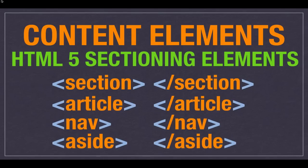With HTML5, we've got four main sectioning elements that help us create sections on the page. A section element is essentially saying that this part of the page is its own separate section that's different from the others. You can have multiple sections on a page, and you can even have sections inside of an article element. It's saying these things are grouped together where they all have a similar meaning — they go toward a common meaning or idea. It's somewhat generic, but they do have to have that similarity.